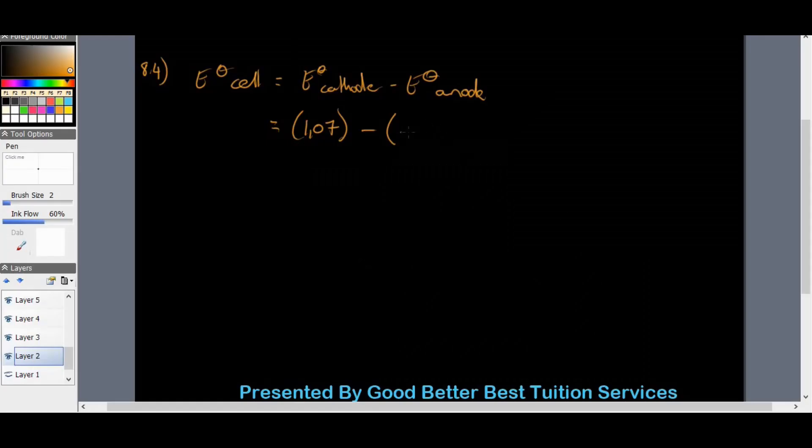Okay. So if we go back to our question. So we have minus minus 0.06. We end up with 1.07 plus 0.06. And we end up with an EMF of the cell. Therefore, is equal to positive 1.13 volts. And that's our final answer there for that one.